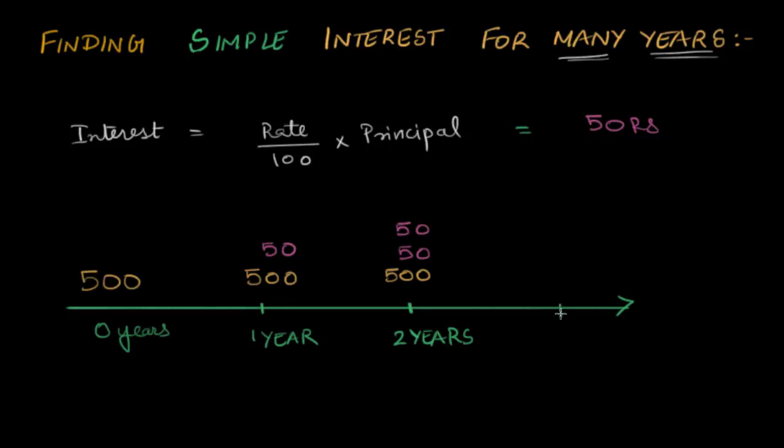What about next year? So you go to three years, and I think you can see what's going to happen. You're going to have a 500, the two 50 rupees from last year, and for this year, because three years have passed, you've held on to the 500 for one more year. So you have to pay another 50. This is how it keeps increasing. You pay more and more money as you hold this 500 rupees, the principal that you borrowed.